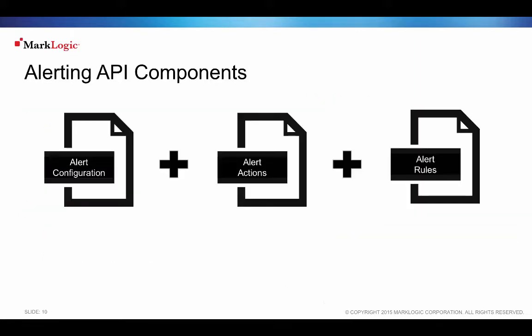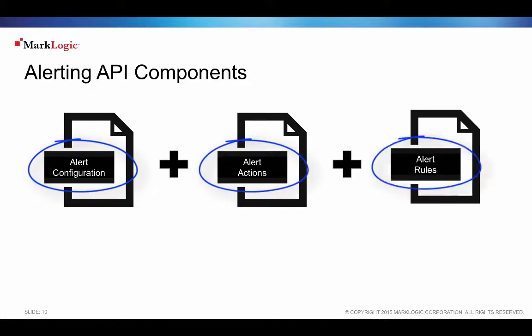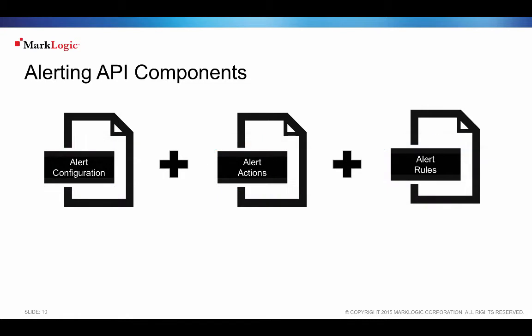Three core components help build robust alerting applications: the alert config, actions to execute when an alert fires, and rules for firing alerts. The alerting API handles the details for security in the application and provides mechanisms to set up these components. The API makes it easy to use triggers and content processing framework to keep the state of documents being alerted.